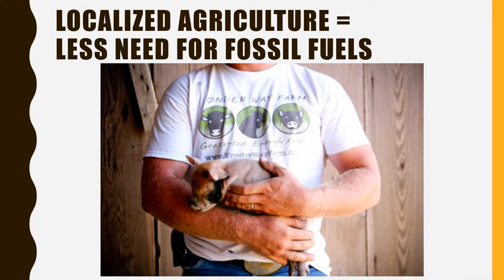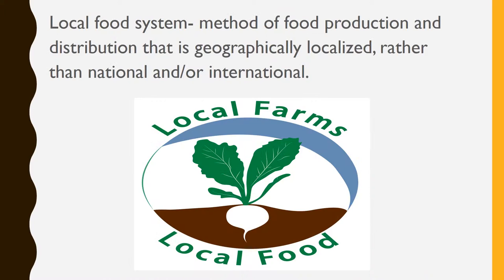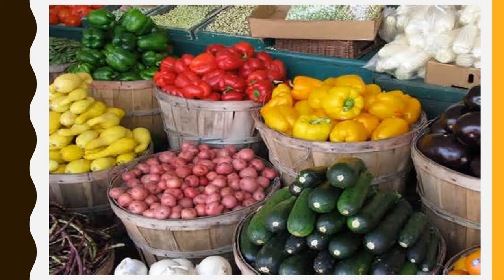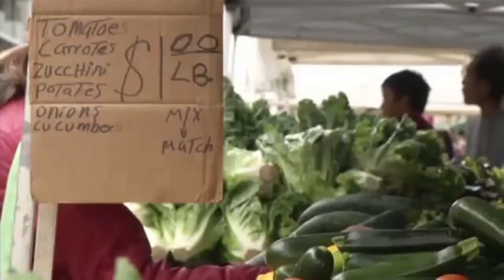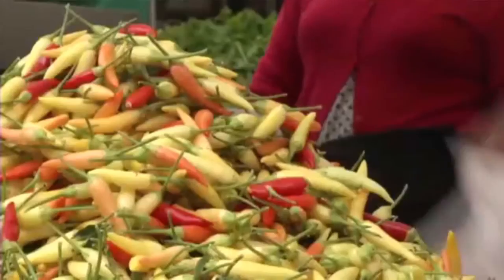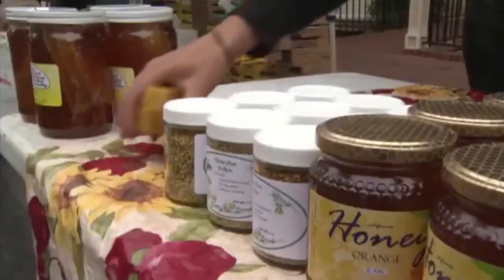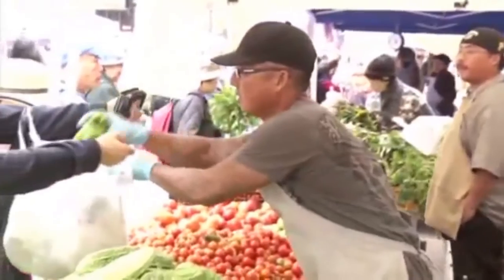I believe that in order to do so, America must utilize localized agriculture as a buffer. The term local food system describes a method of food production and distribution that is geographically localized rather than national and/or international. Food is grown and harvested close to consumers' homes, then distributed over much shorter distances than in the conventional global industrial food system. In general, local food systems are associated with sustainable agriculture.